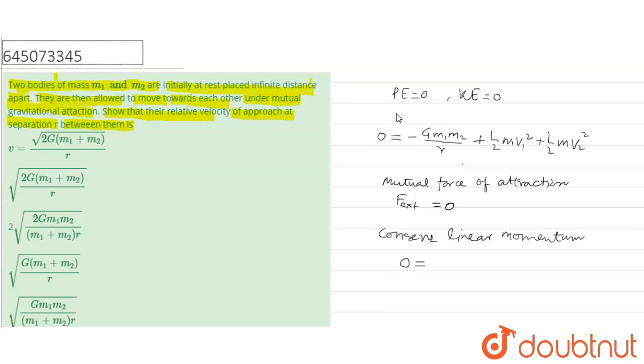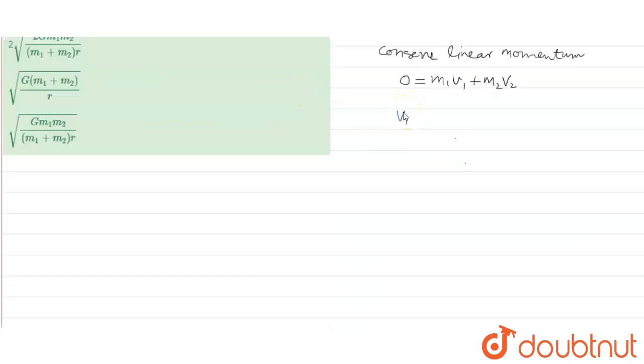Zero is equal to m1 v1 plus m2 v2, so v1 will be equal to m2 v2 upon m1. This will be minus because they are moving in opposite directions, so we will take here the magnitude.